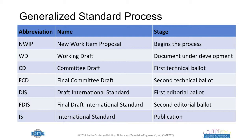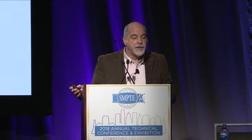The generalized standards process starts with a new work item proposal — somebody proposes something, it gets balloted. Then a working draft is developed, which is a document under development. Once there is a confirmed, agreed-upon technical document ready for balloting, it gets issued as a committee draft — the first technical ballot. Then traditionally there's been a final committee draft, or second technical ballot, followed by two editorial ballots: draft international standard and final draft international standard, before publication. Many will recognize this as similar to SMPTE's process.